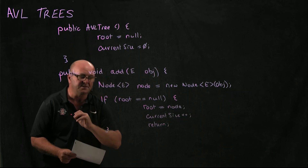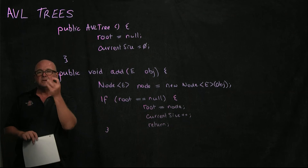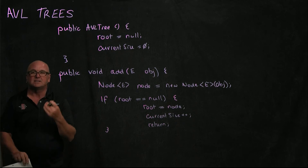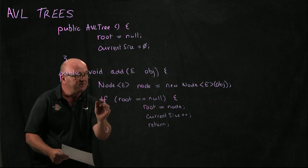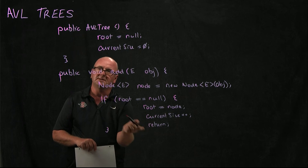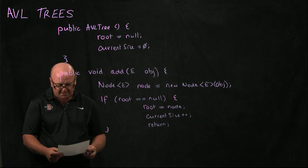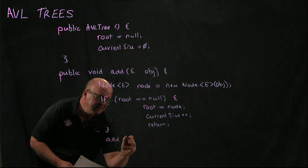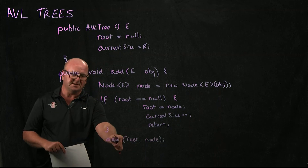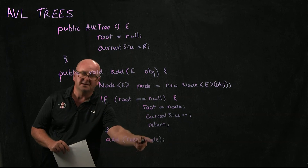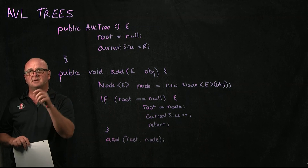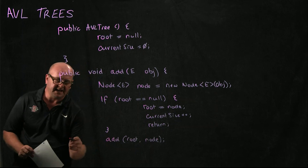If root is not null, then we need to start at the root and trickle down either left or right to figure out where to add the element. We call a helper method that takes two nodes: the first is the current position we're looking at, and the second is the node we want to add. This allows us to recursively traverse the tree left or right to find the correct insertion point.